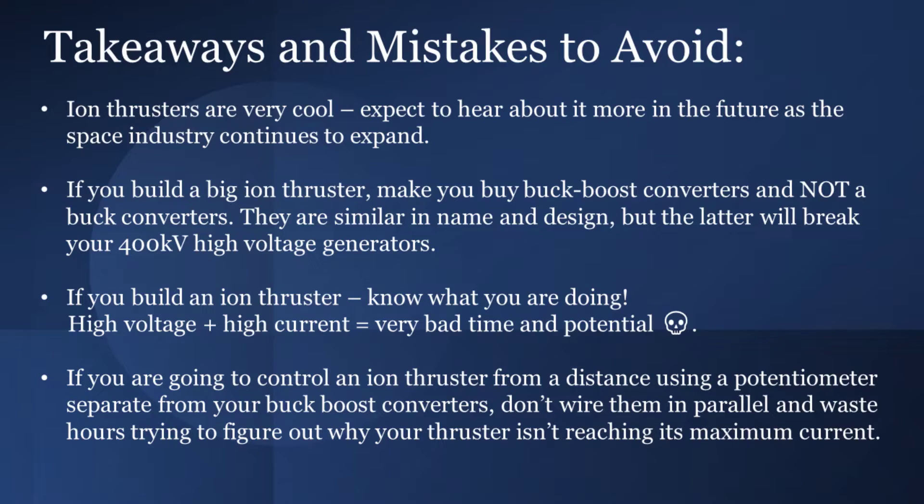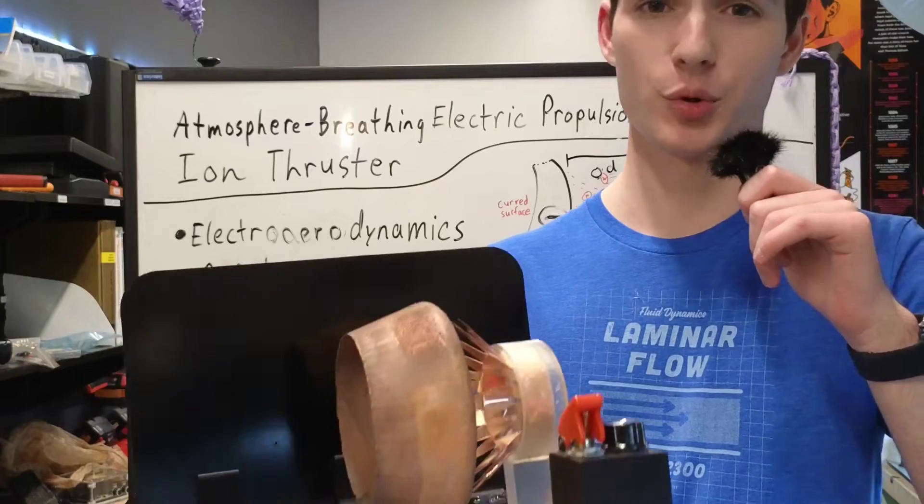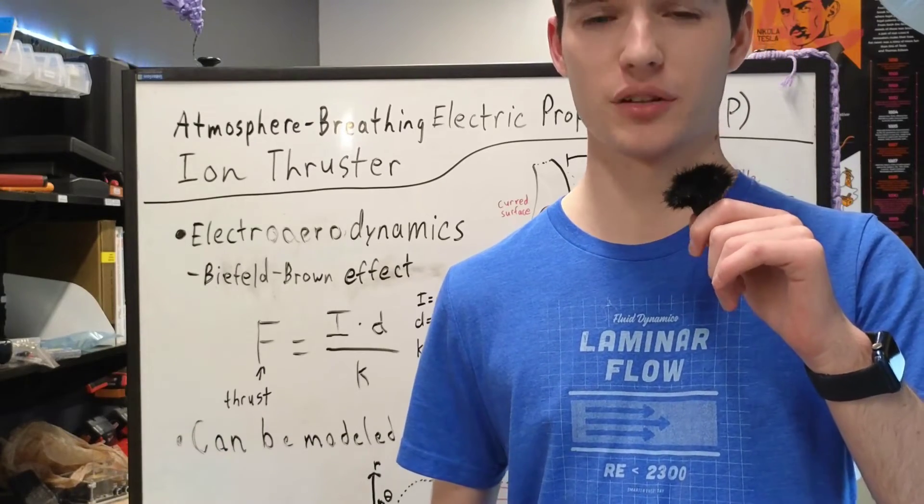Here are some takeaways and mistakes to avoid if you decide to build your own ion thruster. So to conclude, our hypothesis was correct, with our ABEP thruster producing more laminar flow with less velocity compared to a conventional fan.